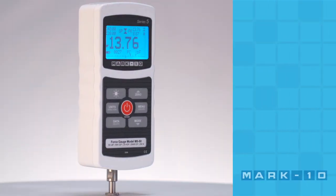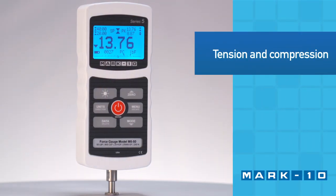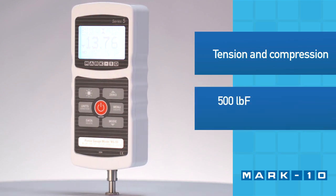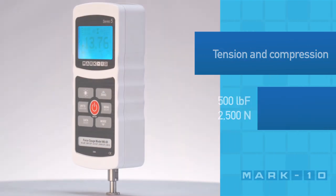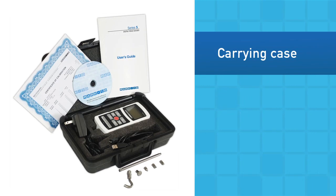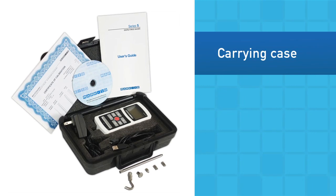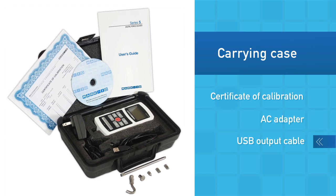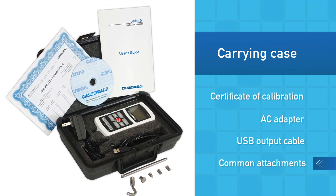The Series 5 Force Gauge is an advanced solution for tension and compression force measurement with capacities up to 500 pounds of force or 2,500 newtons. The Force Gauge is supplied in a cushioned carrying case with certificate of calibration, AC adapter, USB output cable, and a set of common attachments.